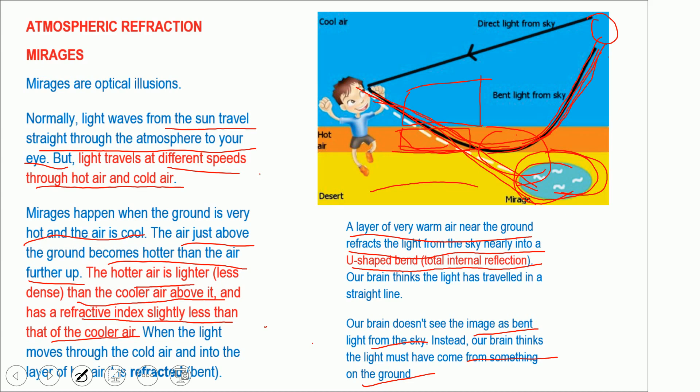To summarize: when the ground is hot, the air near the ground becomes hot and less dense, while the air above is cooler and denser. Light from the sun enters the hot air where the refractive index is less, causing it to bend. Sometimes total internal reflection occurs, and the light falls on our eye. Our eye perceives it as coming straight, so we feel like there is some object — like water — in that place. That is the mirage.